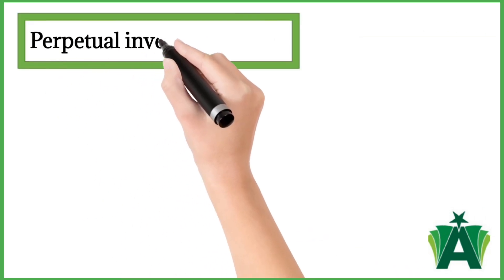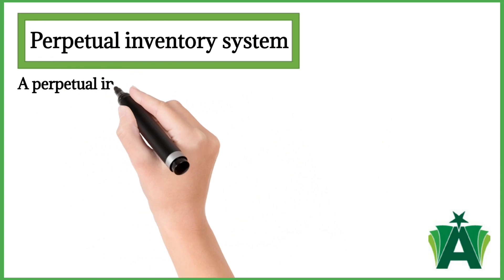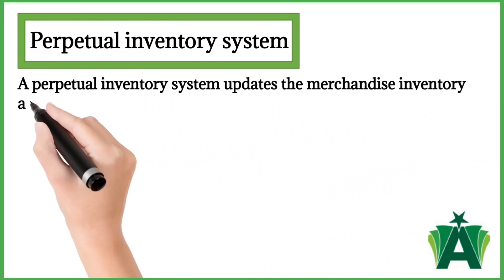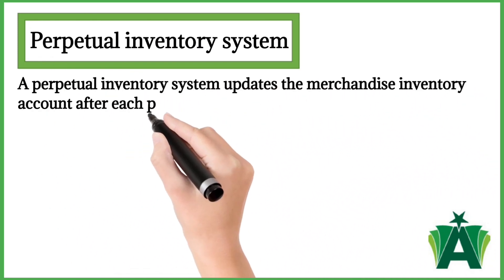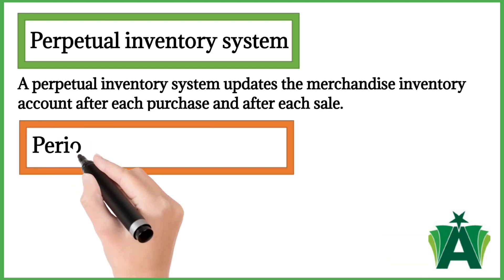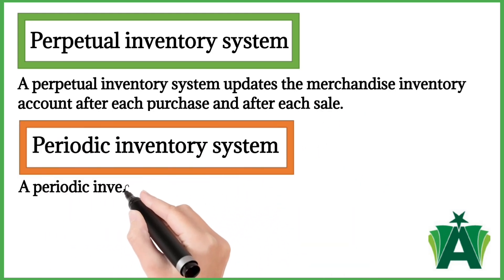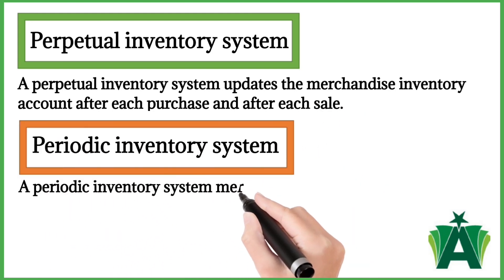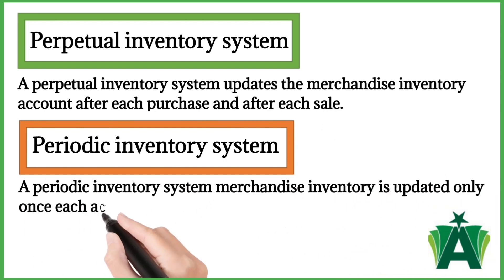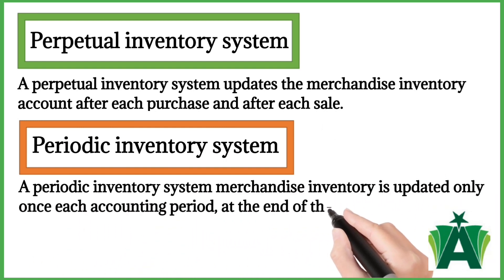Perpetual inventory system: A perpetual inventory system updates the merchandise inventory account after each purchase and after each sale. Periodic inventory system: A periodic inventory system's merchandise inventory is updated only once each accounting period, at the end of the period.